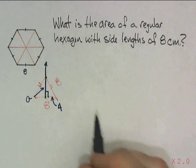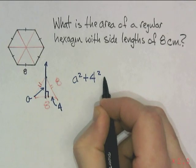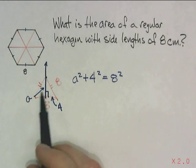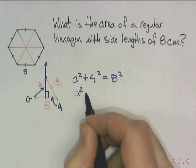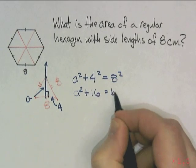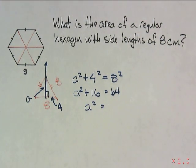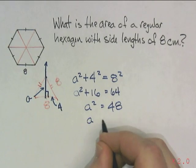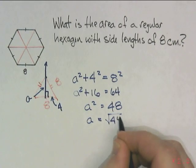So, Pythagoras helped us out here. A squared plus 4 squared equals 8 squared. Remember, I'm looking for, if I find that A, then I can find the height. A squared plus 16 equals 64. A squared equals 48.